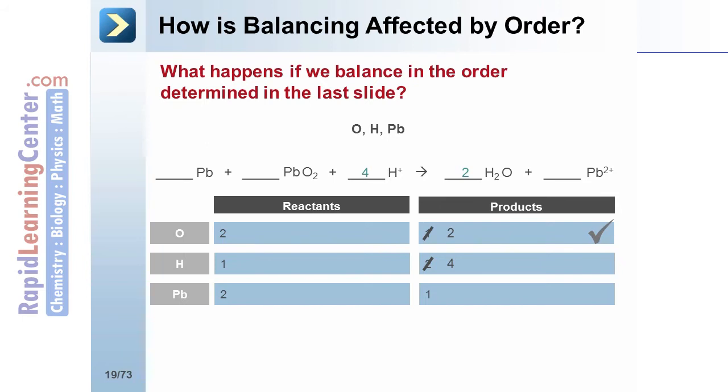Next, we balance hydrogen by placing a four in front of H plus on the reactant side. This completes the balancing of hydrogen.